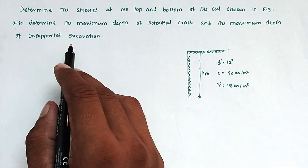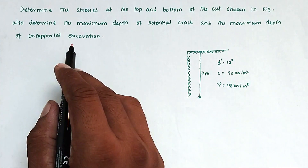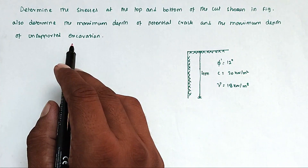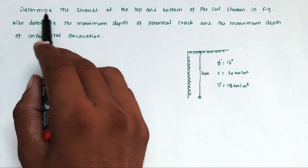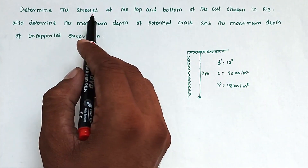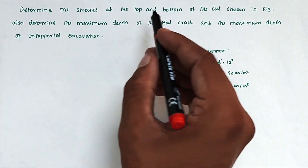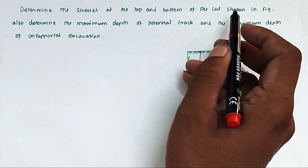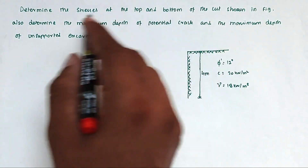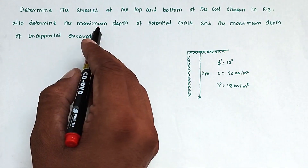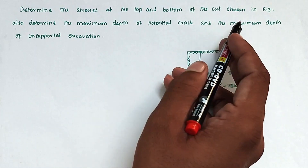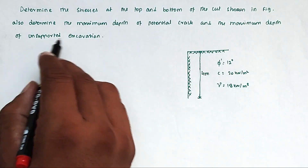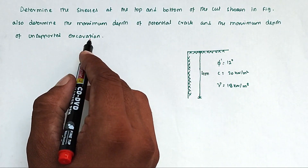Hello friends, welcome to Surajani Exam. Today we are going to see a problem related to soil mechanics in the topic of stability of slopes. The problem is: determine the stresses at the bottom and top of the cut shown in the figure. Also determine the maximum depth of the potential crack and the maximum depth of unsupported excavation.